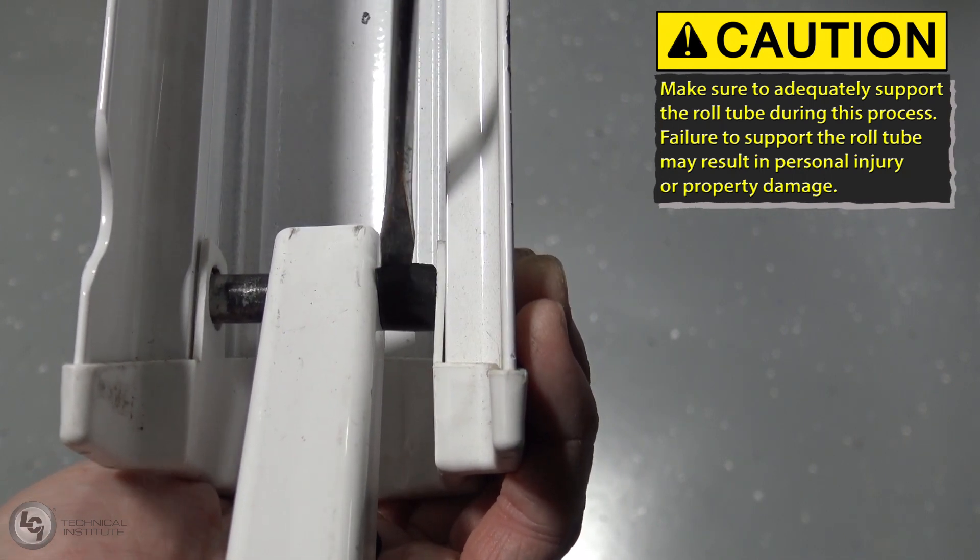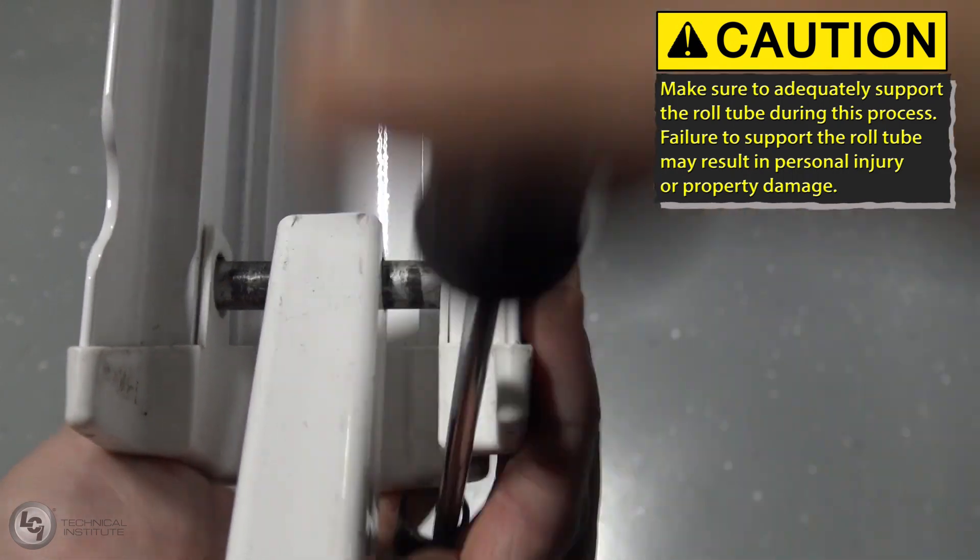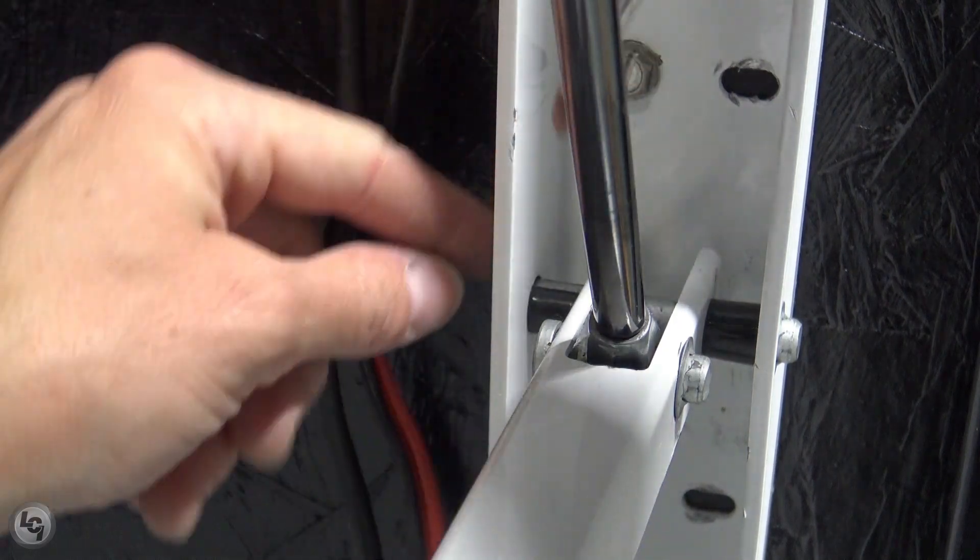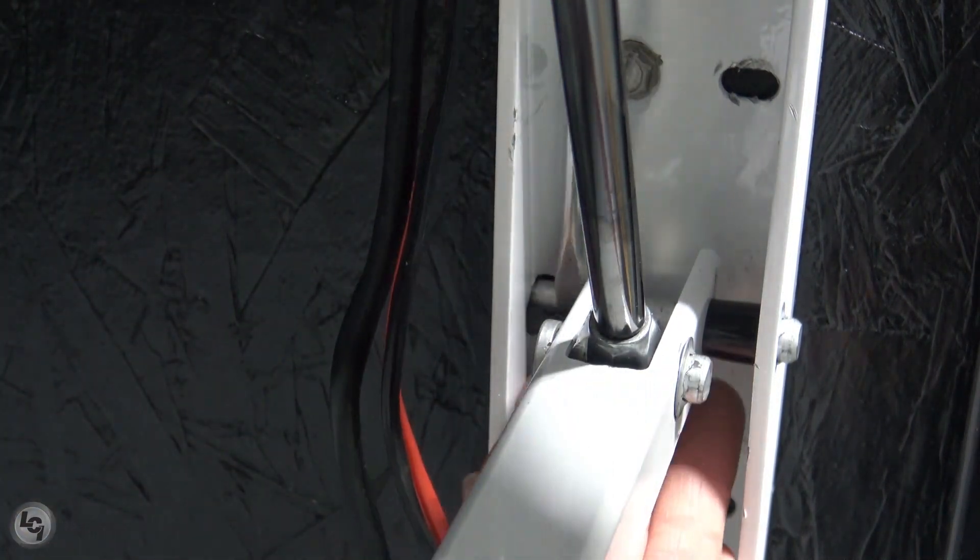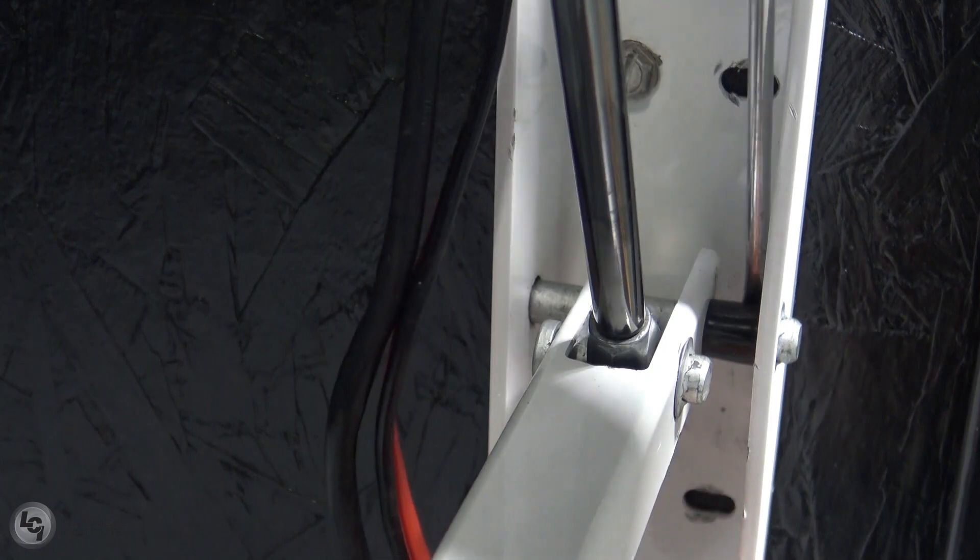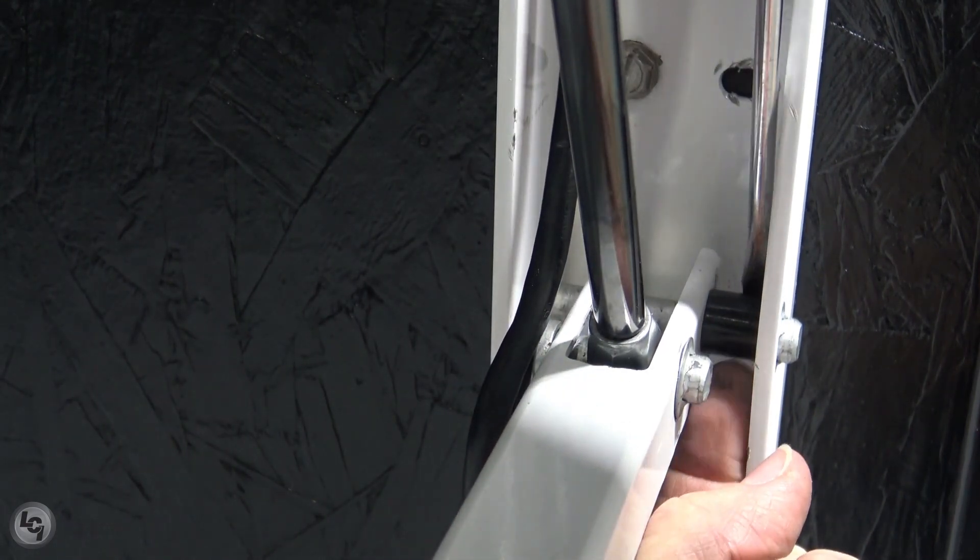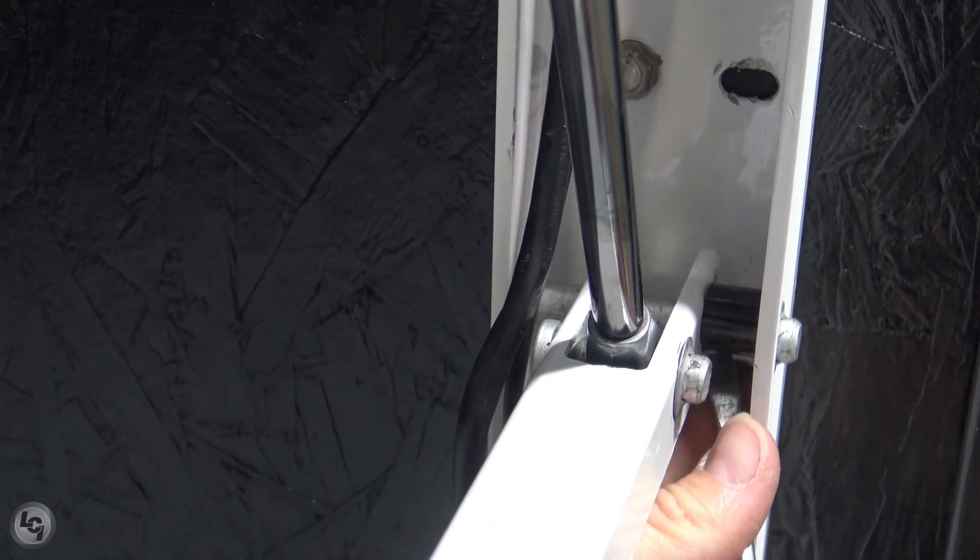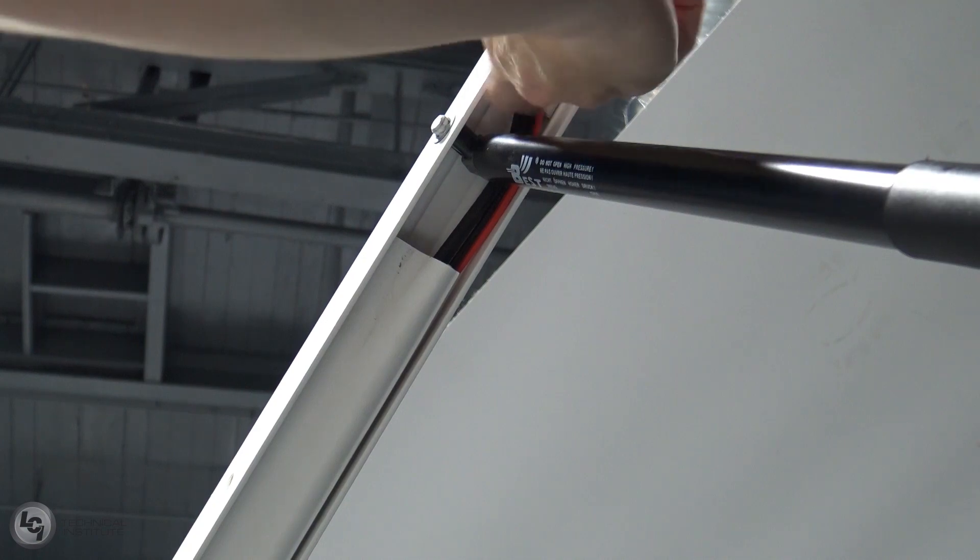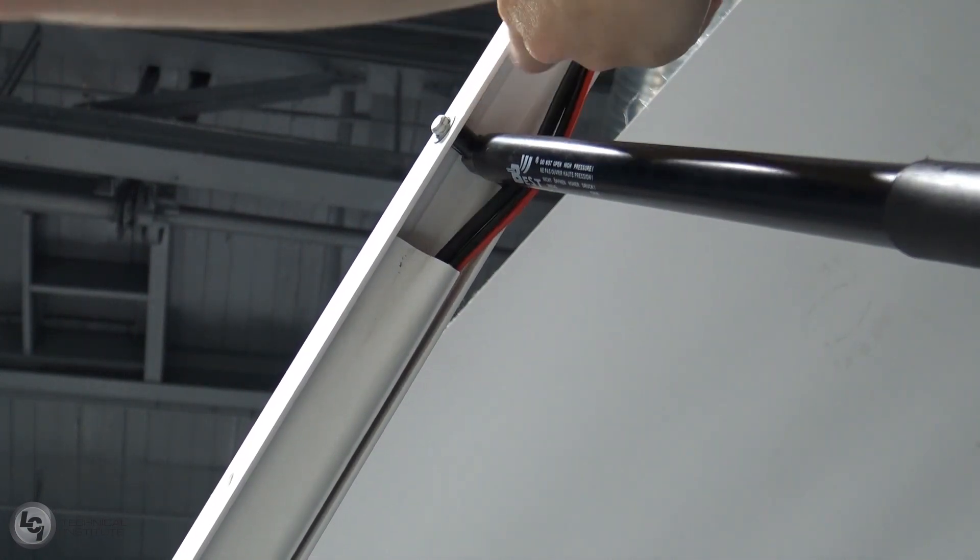You'll remove the spacers where the pitch arm meets the outer arm, where the pitch arm meets the mount arm on the side of the coach, and lastly, where the gas strut meets the inner arm on the awning.